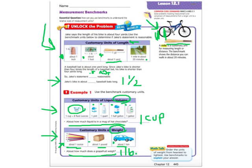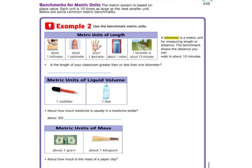All right, go ahead and flip it over to 446. And we've got some more here. So these are now metric units. It says the metric system is based on place value. Each unit is 10 times as large as the next smaller unit. So that's easy to calculate because we're just adding a zero each time.